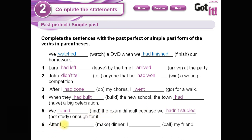Number six: 'After I had made dinner, I called my friend.' So in these examples you can see the relationship between the two actions in the past. En todos estos ejemplos se puede ver claramente cuál es la relación entre los dos hechos en el pasado — cuál sucedió primero y cuál sucedió después. El que sucede primero va a tener la forma past perfect, el que sucedió luego va a tener la forma pasado simple.